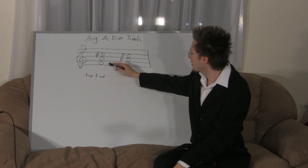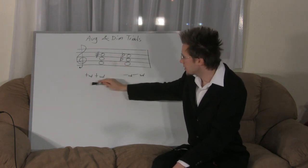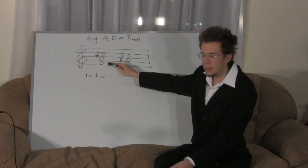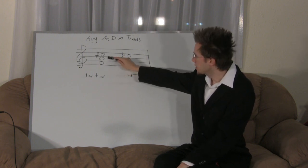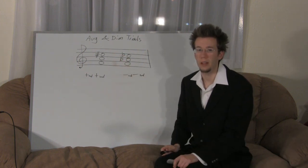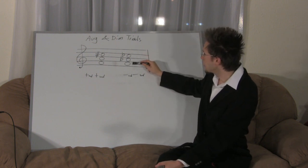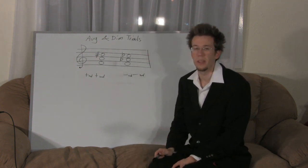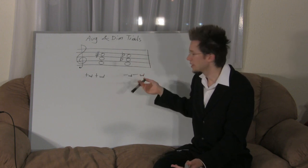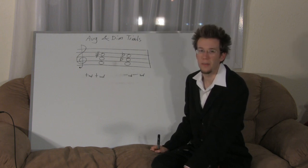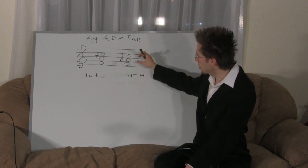The formula for an augmented triad is a major third plus another major third. For example, F to A is a major third, and A to C-sharp is another major third — that's an augmented triad. For diminished: F to A-flat is a minor third, and A-flat to C-flat is another minor third.